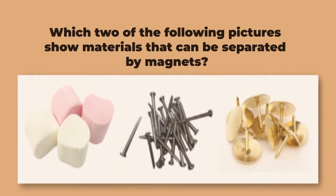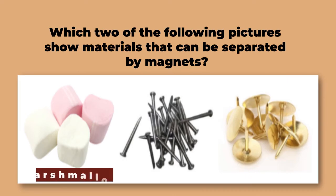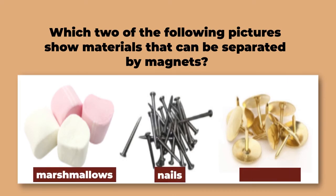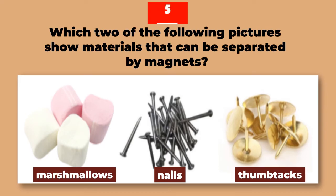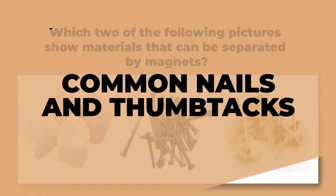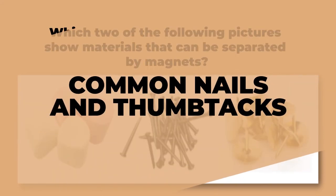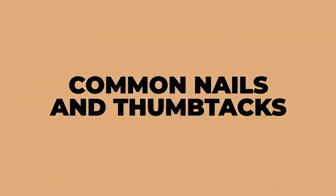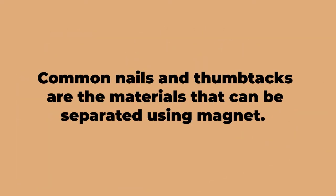Numbers four and five: Which two of the following pictures show materials that can be separated by magnets? Marshmallows, common nails, thumbtacks. Common nails and thumbtacks — you can answer this item in any order. Common nails and thumbtacks are the materials that can be separated using magnet.